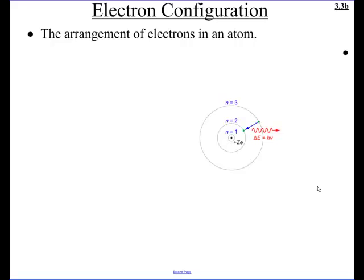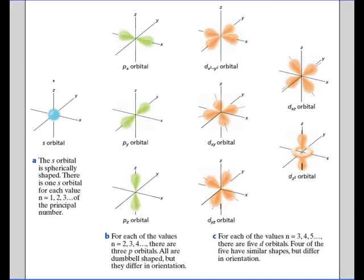Welcome to Chapter 3, Section 3b. We're going to continue on from our last discussion. We finished up with orbitals — there are f orbitals, seven of those, and they get even more odd-looking than the d orbitals. What we're going to do now is come up with a way to put the electrons in the atom into their corresponding orbitals.